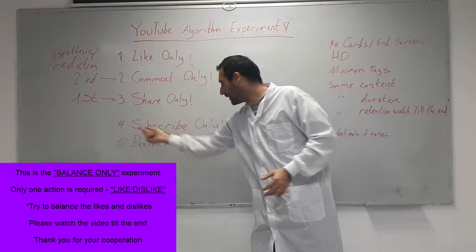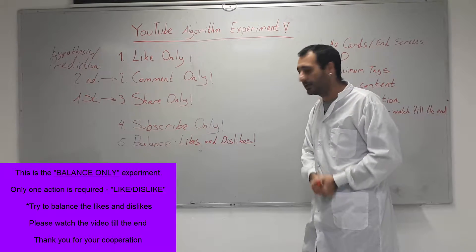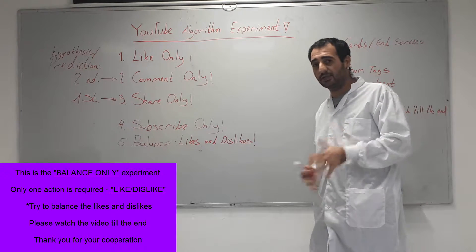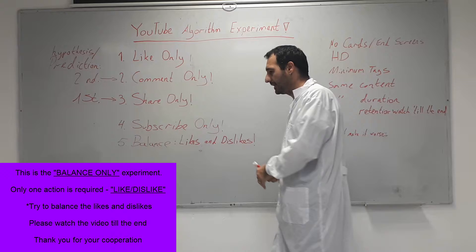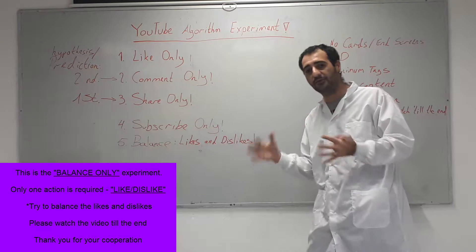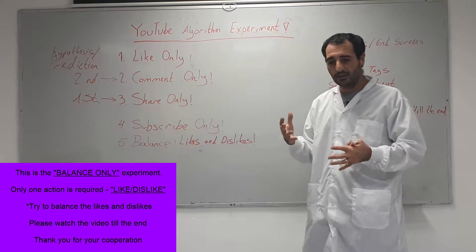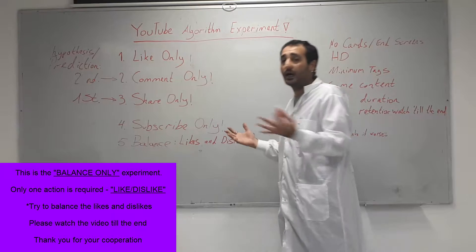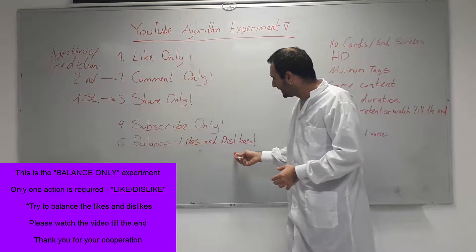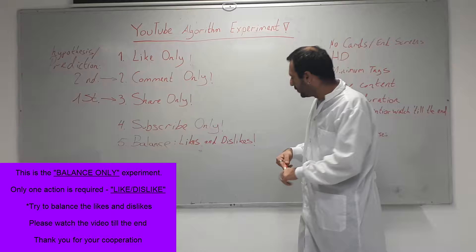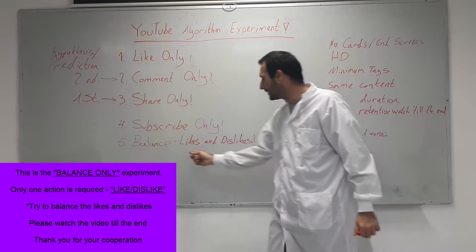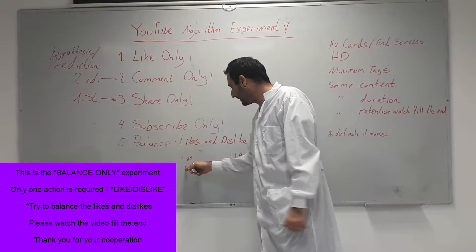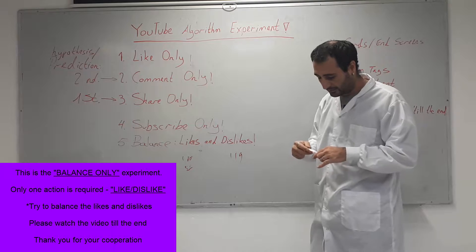Subscribe only - you can only subscribe from the subscribe video experiment. And balance - there is a theory that even a dislike is a good thing, it's an engagement on your video. When it comes with 50/50 for dislikes and likes, it may signal that it's controversial and YouTube may push your video. I don't know. So in this video, if you see 119 dislikes and 100 likes, then like it. If you see it otherwise, then press dislike. You need to strike for a balance in this experiment.